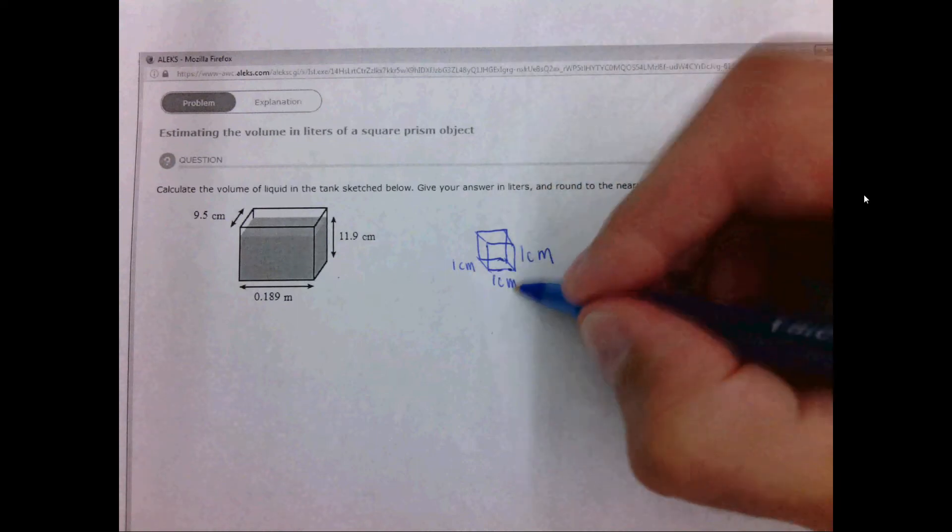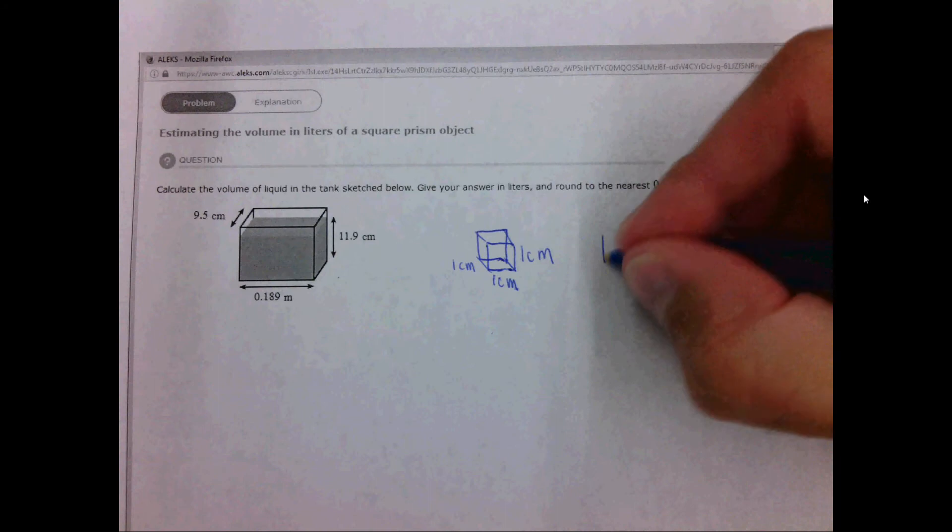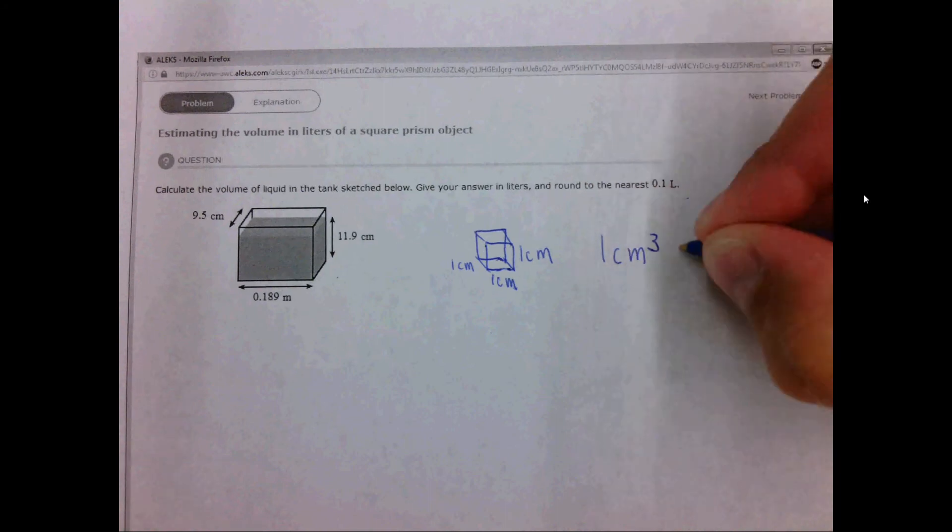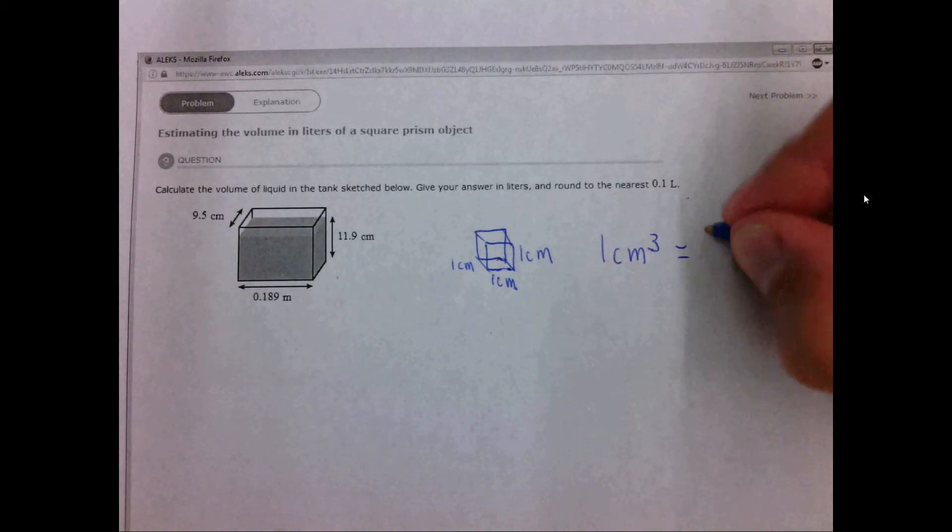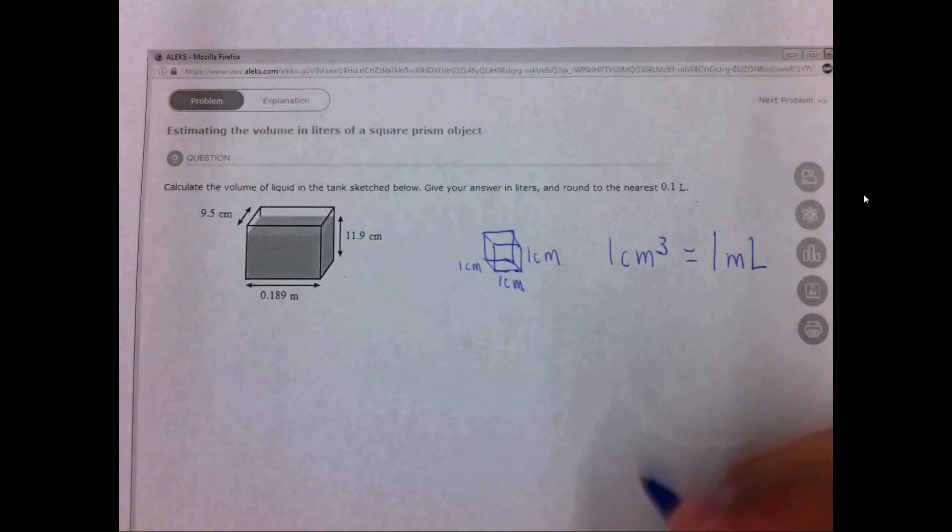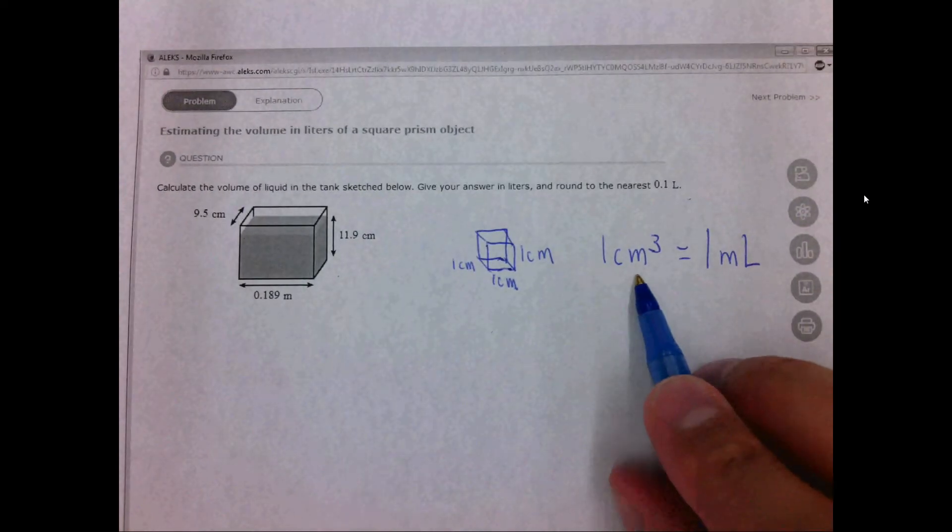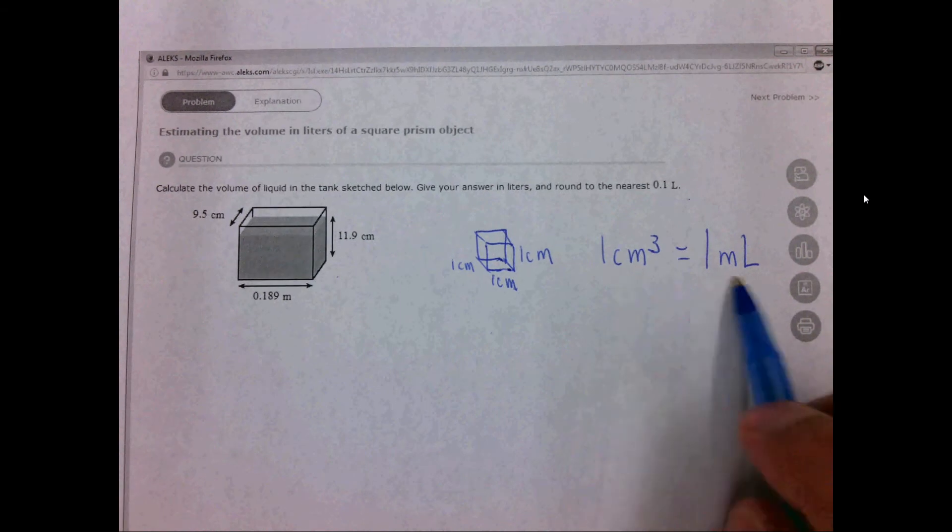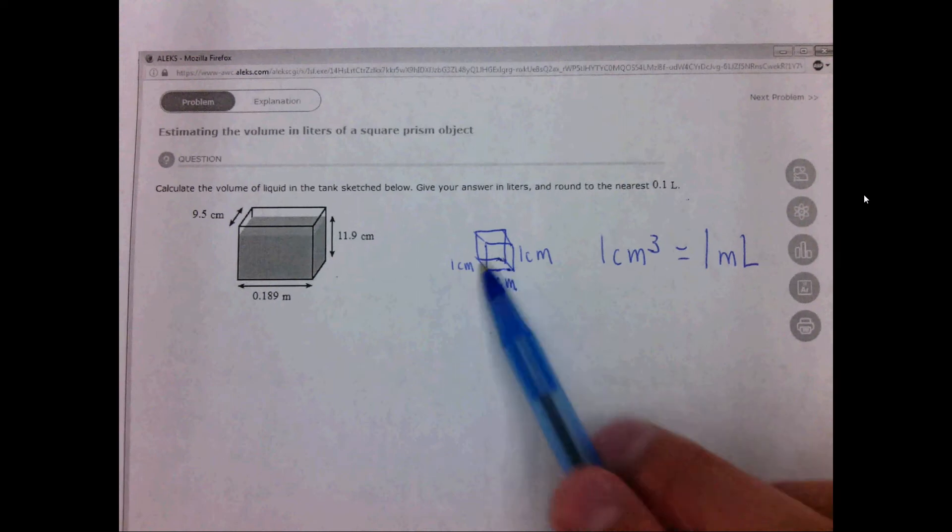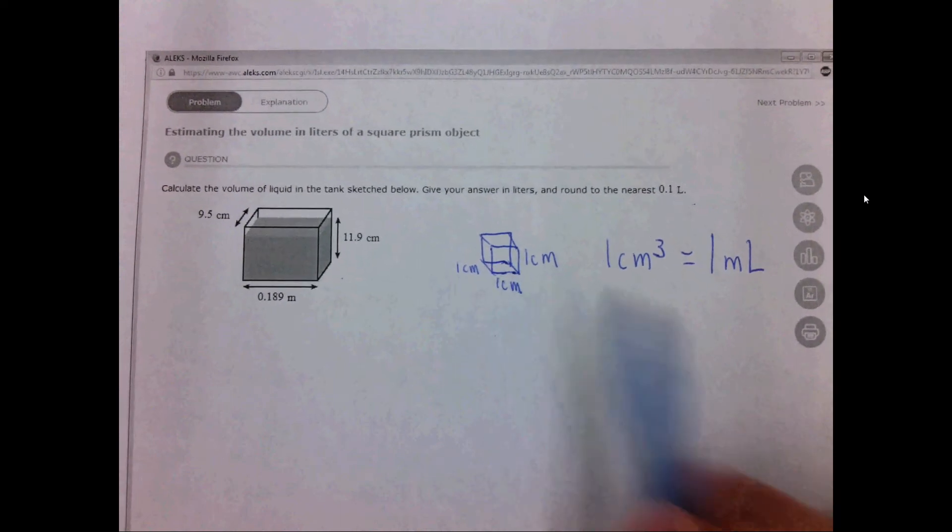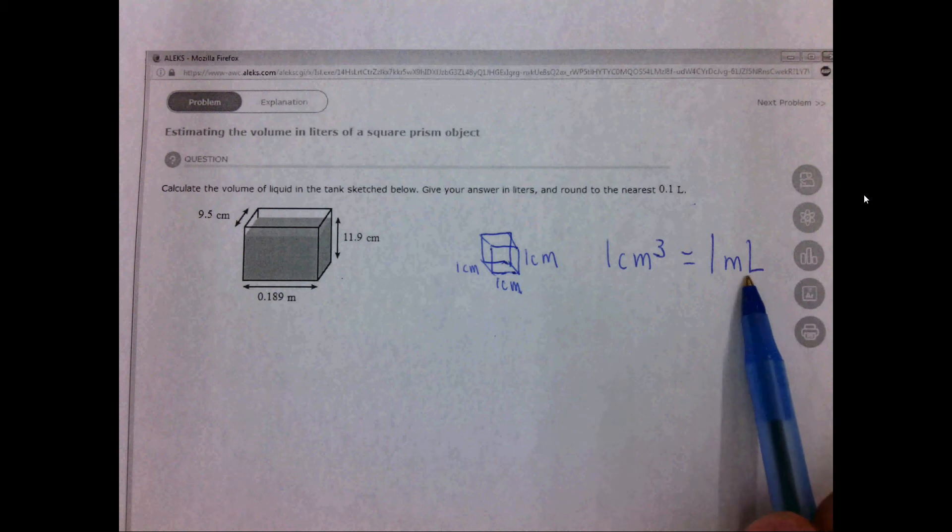So one centimeter times one centimeter times one centimeter, or one centimeter cubed, is the definition of a volume of one milliliter. In the healthcare industry you may hear a centimeter cubed called a cc, and a cc or centimeter cubed is exactly equal to one milliliter. So a cube that's one centimeter by one centimeter by one centimeter holds a volume of one milliliter.